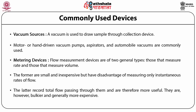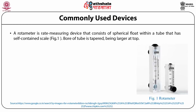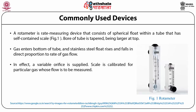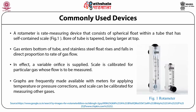A rotameter is a rate-measuring device that consists of a spherical float within a tapered tube, larger at the top. Gas enters the bottom of the tube and a stainless steel float rises and falls in direct proportion to the rate of gas flow, effectively supplying a variable orifice. The scale is calibrated for a particular gas, for example air, whose flow is to be measured. Graphs are frequently made available with the meters for applying temperature or pressure corrections, and the scale can be calibrated for measuring other gases.